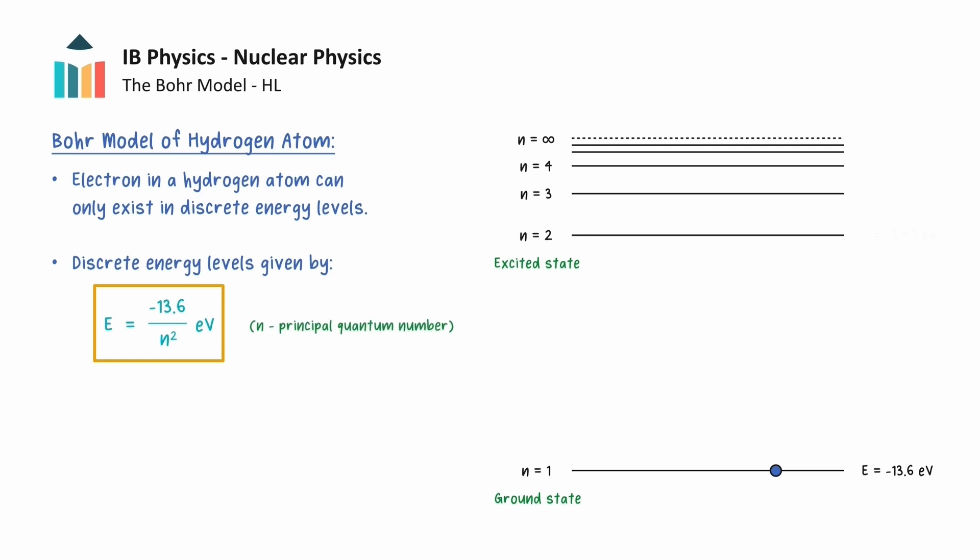So for n equals 2, the first excited state will have an energy of negative 3.4 electron volts, and energies in the other excited states can be calculated similarly. The energies obtained from this formula correspond with those that can be calculated using the sum of the kinetic and potential energies of the electrons and strictly defined radii corresponding to the energy level. We will discuss these radii on the next slide.